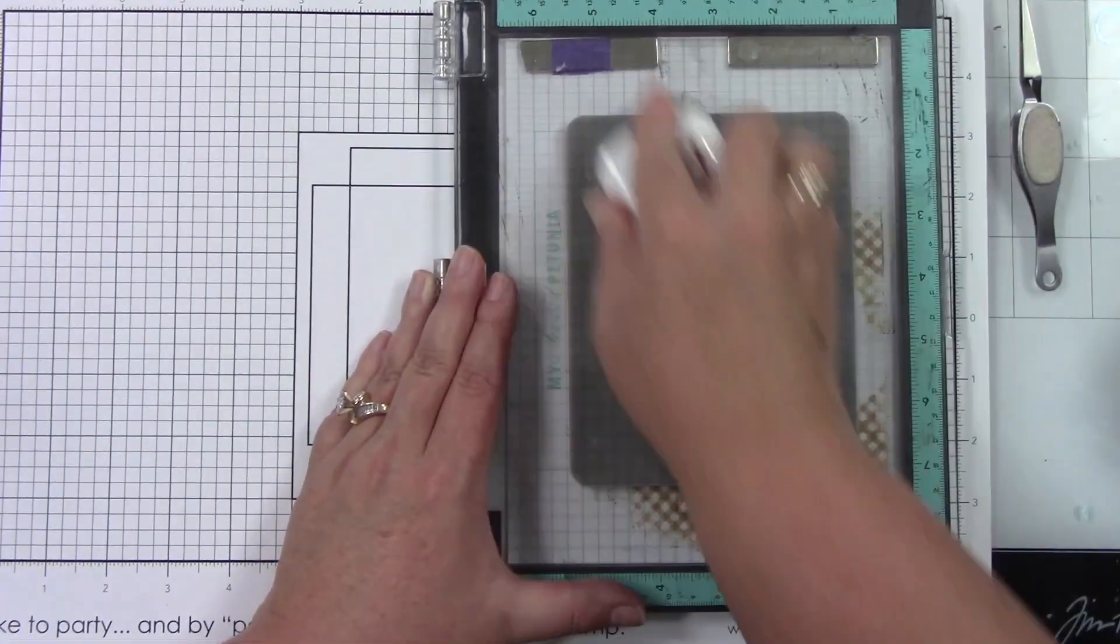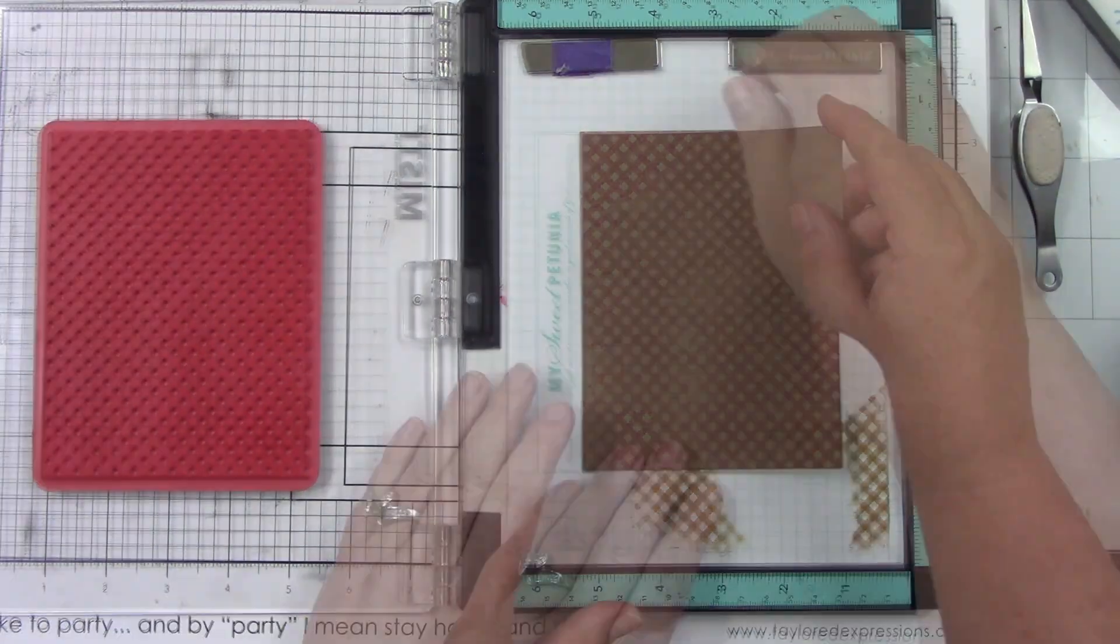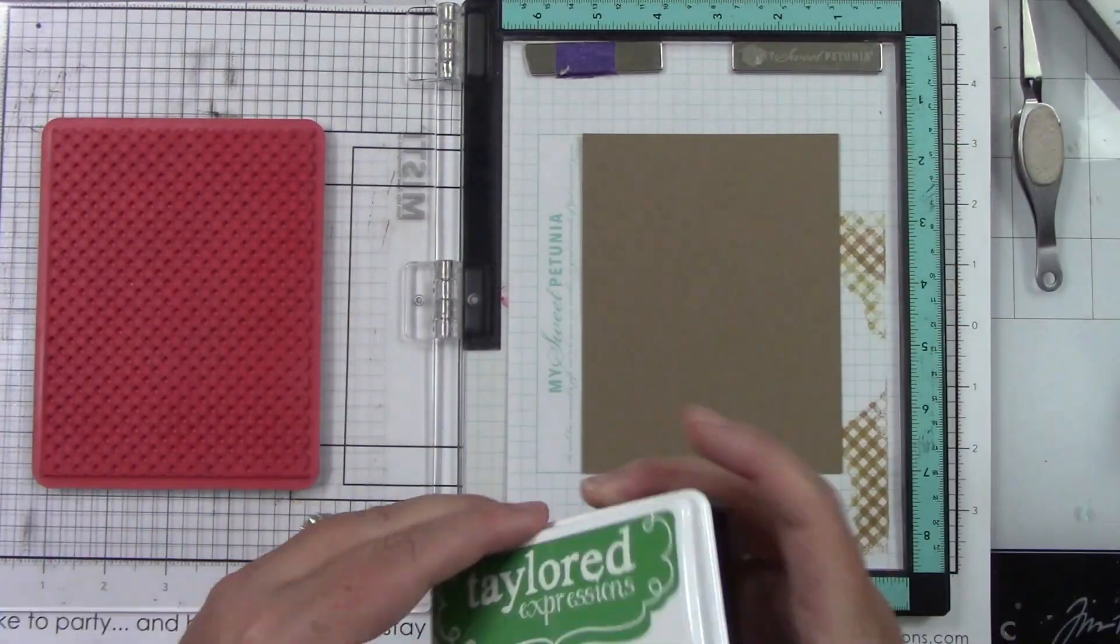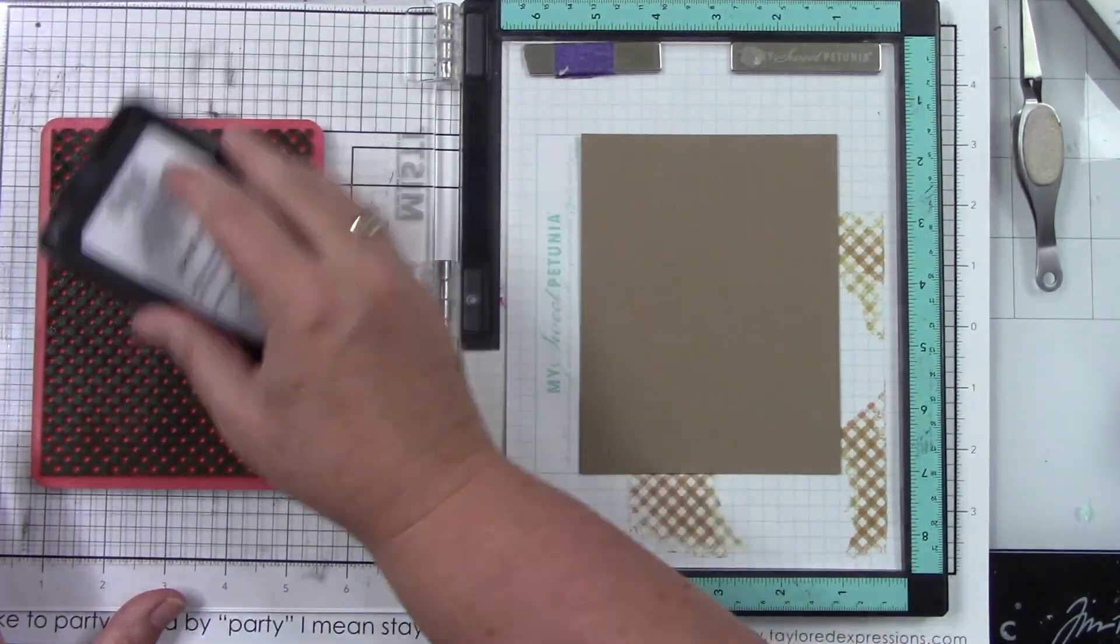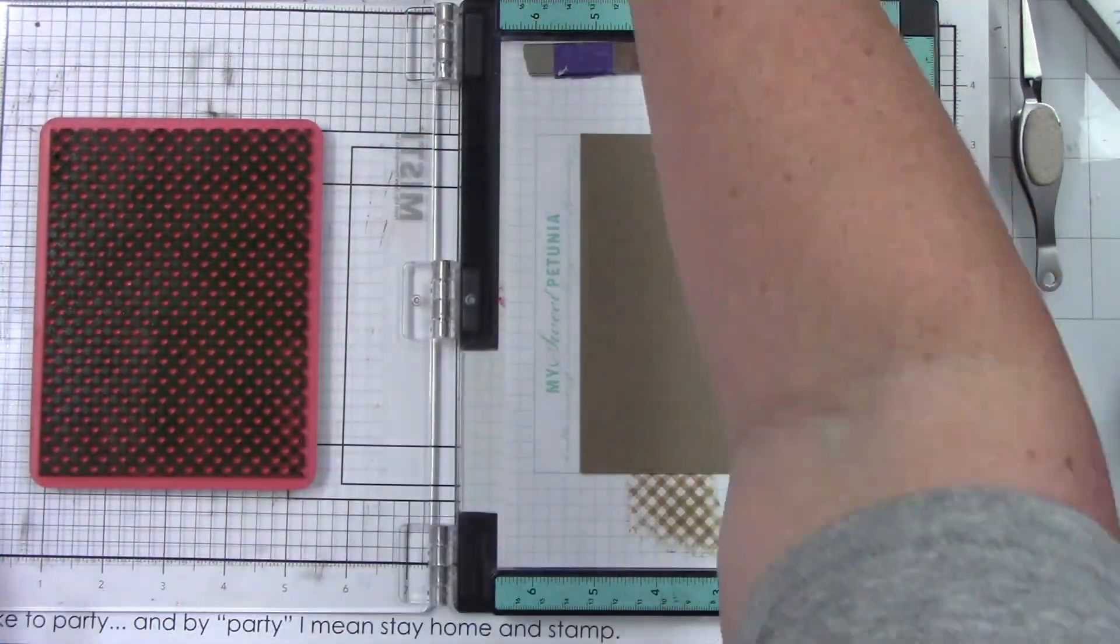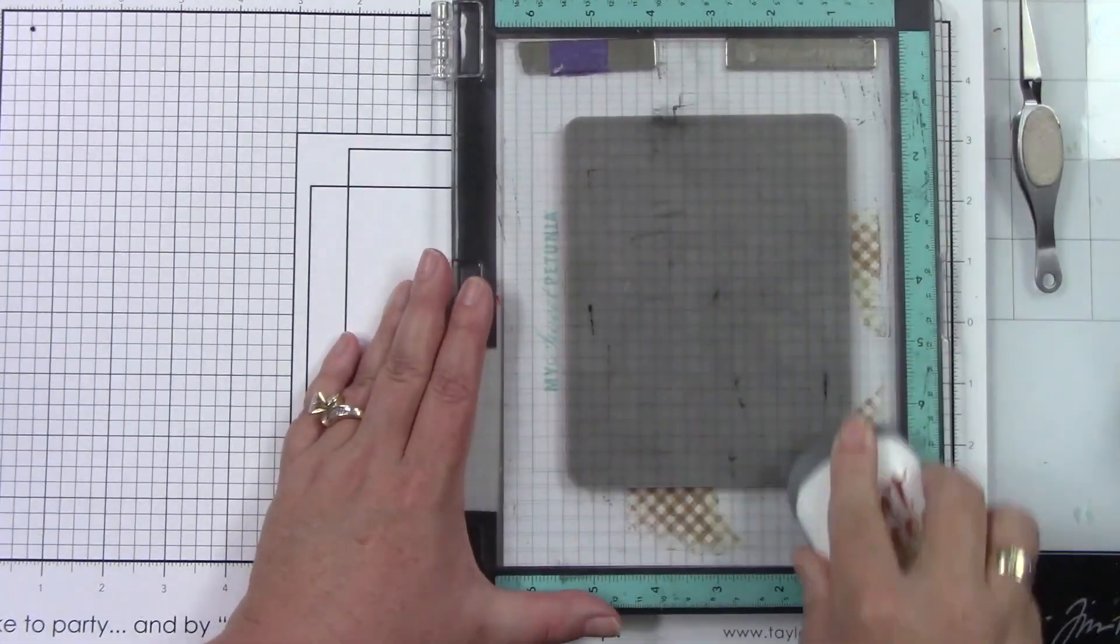This is going to be part of our background with those Tag Stacklets 2 dies. We're going to use two of those. This background is going to be for the largest tag. Now I have my red one, let's do the green one with that brand new Winter Green. It is a perfect green, it is so pretty, and I love it against this Latte cardstock.